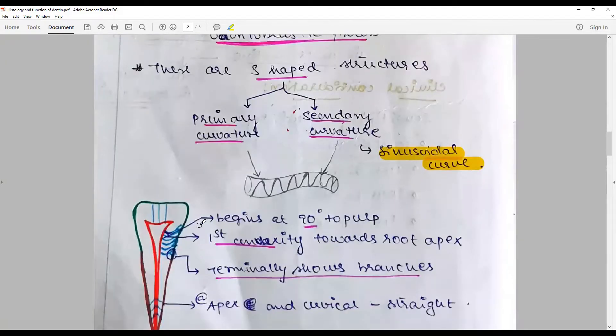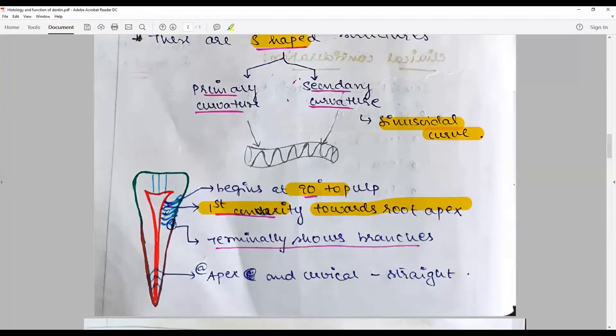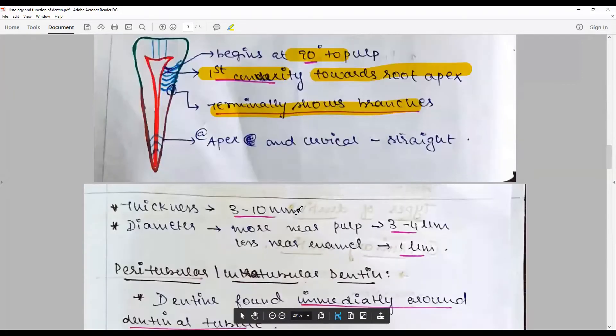At the pulpal end, the dentinal tubules begin at 90 degrees to pulp. The first convexity of the S-shape is towards the root apex, and the next curvature is sinusoidal curve and terminally shows branches. Nearer to the cervical there are more or less straight dentinal tubules.